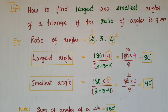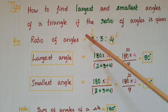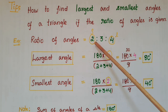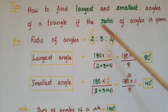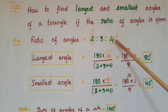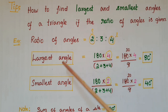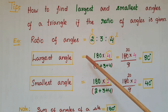Hello everyone. Today I am going to share some tips to find the largest and smallest angles of a triangle if the ratio of angles is given. For example, if the ratio of angles of a triangle is 2:3:4, here the largest number is 4 and the smallest number is 2.